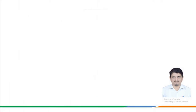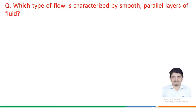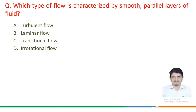Next question is: which type of flow is characterized by smooth parallel layers of fluid? The options given are: A. Turbulent flow, B. Laminar flow, C. Transitional flow, D. Irrotational flow.